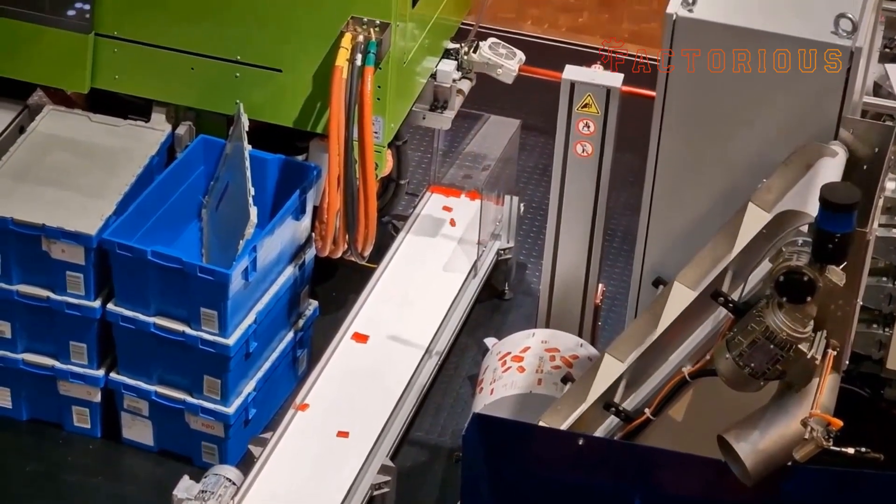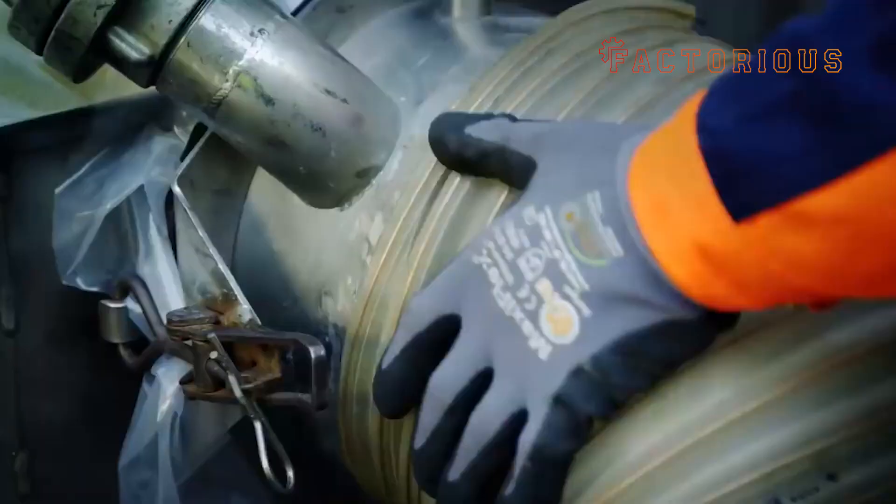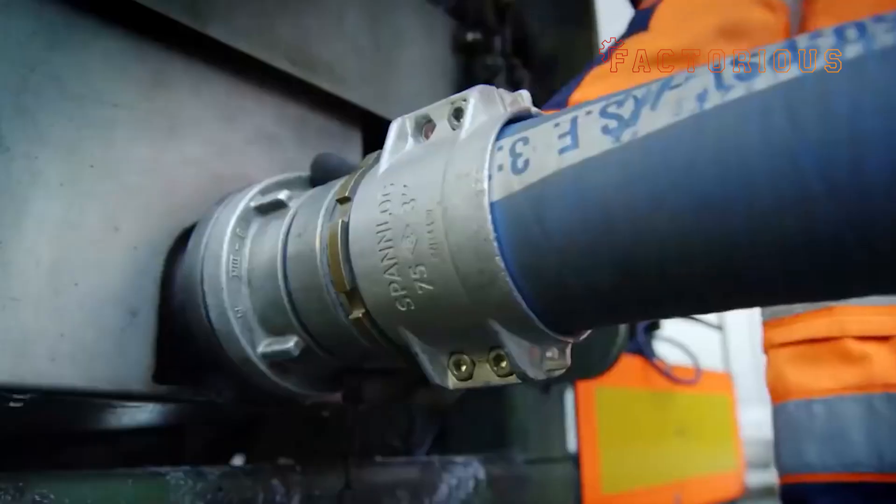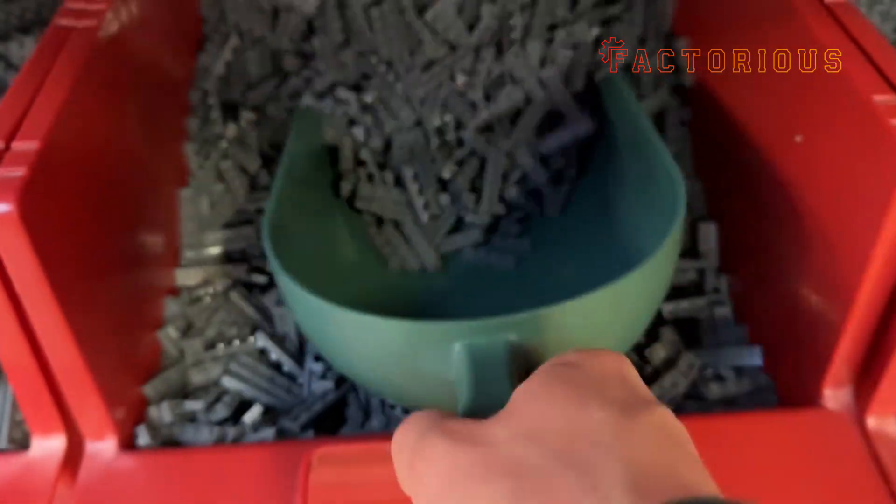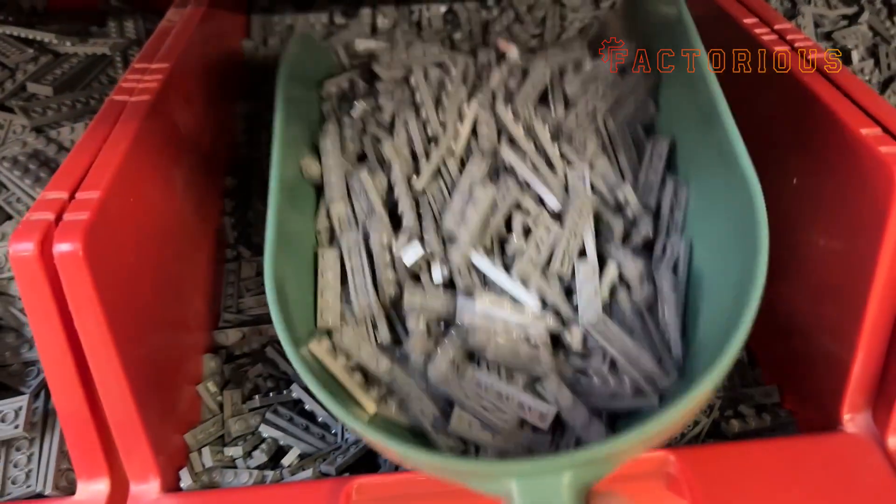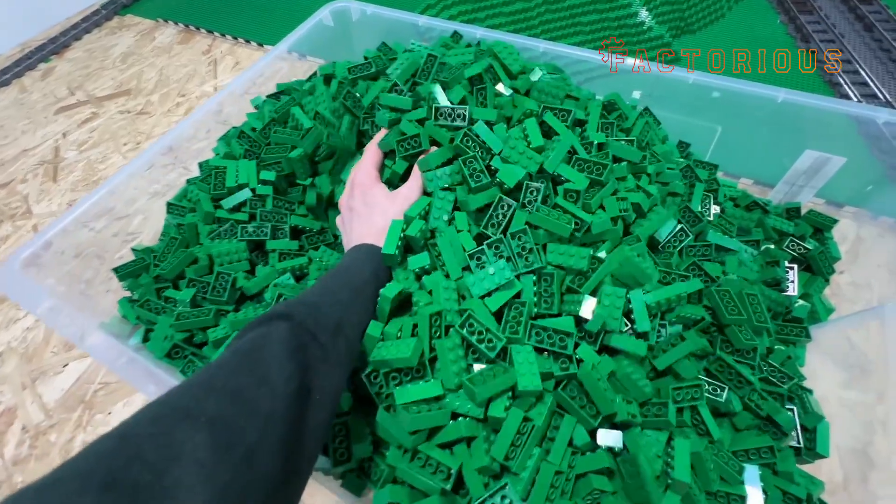Fun fact, Lego doesn't just buy pigments. They make their own master batches in-house to ensure color consistency. A Lego brick made in Denmark will have exactly the same shade as one made in Mexico or China.